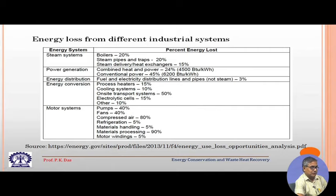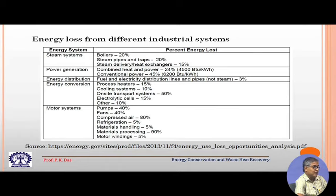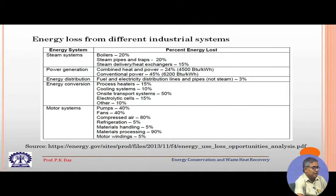Steam delivery exchangers — wherever there is any heat exchange process involving steam — that also constitutes around 15 percent. Then we come to power generation. This will be elaborated in the following lectures as it could be combined heat and power. If we have the option for generating both heat and power, the losses are around 24 to 25 percent. For conventional power, that is around 45 percent energy loss which can be recovered. These are estimates based on surveys of different industries, and for a specific industry these values may differ slightly.